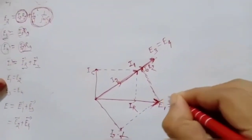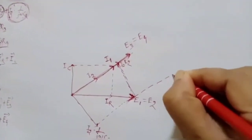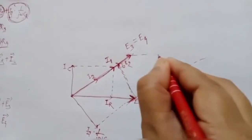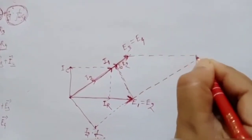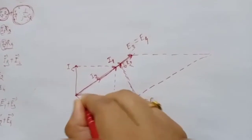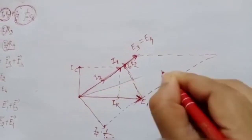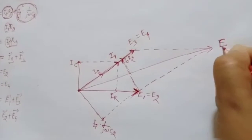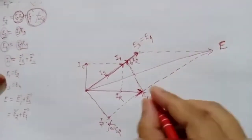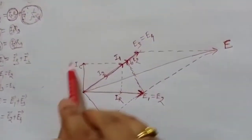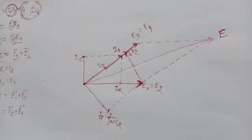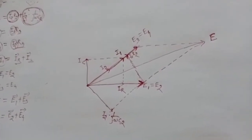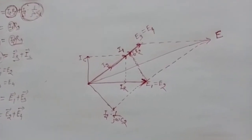The total voltage E is the phasor sum of E1 and E3 (or equivalently E2 and E4). This completes the phasor diagram of Wien's Bridge. In the next video we will discuss Owen's Bridge. Thank you.